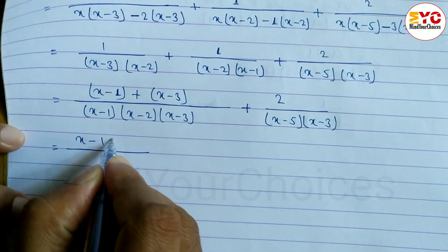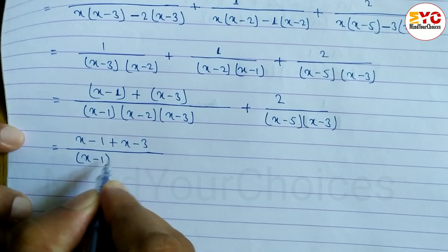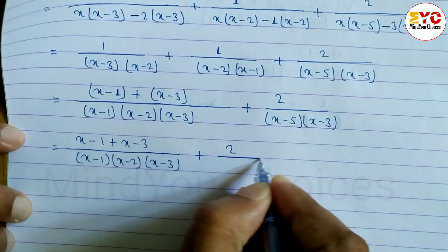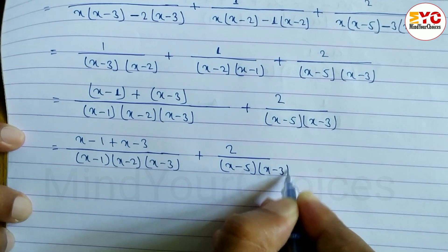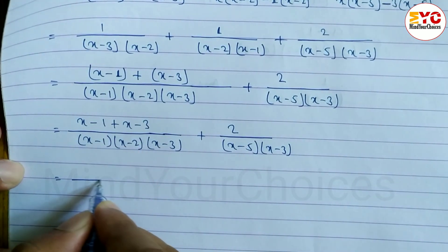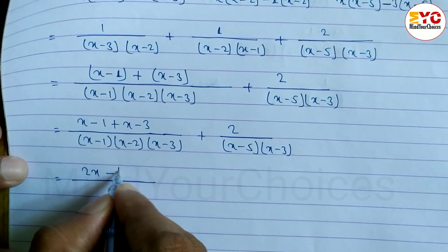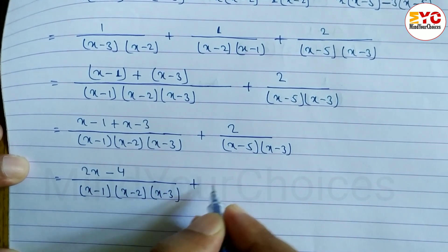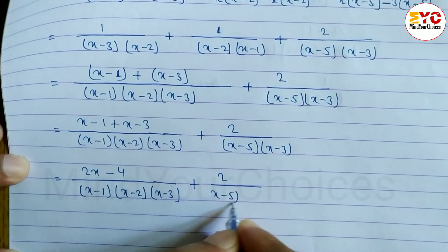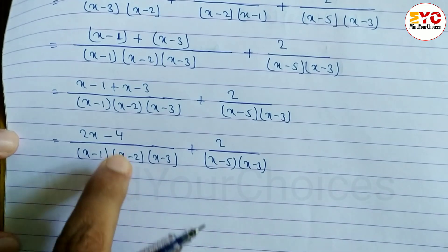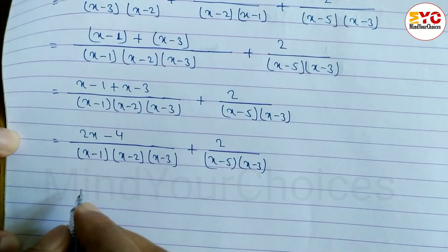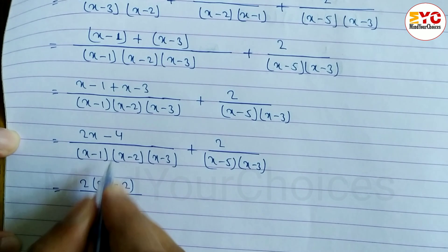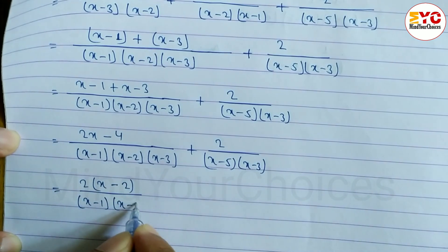Open the bracket. The numerator becomes: (x − 1) + (x − 3) divided by (x − 1)(x − 2)(x − 3), plus 2 divided by (x − 5)(x − 3). Combining the first two terms: x minus 1 plus x minus 3 equals 2x minus 4. We can take 2 common: 2(x − 2). So the expression becomes 2(x − 2) divided by (x − 1)(x − 2)(x − 3).